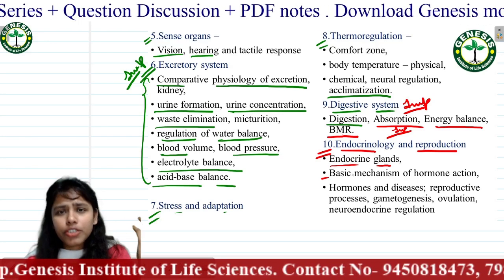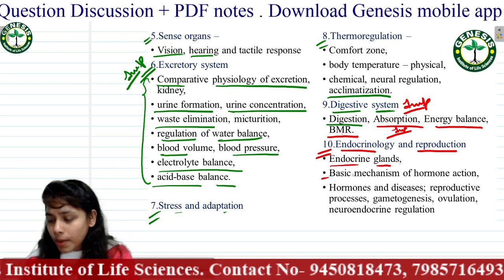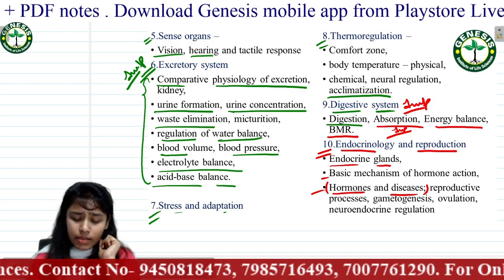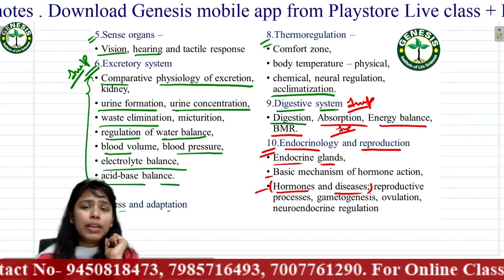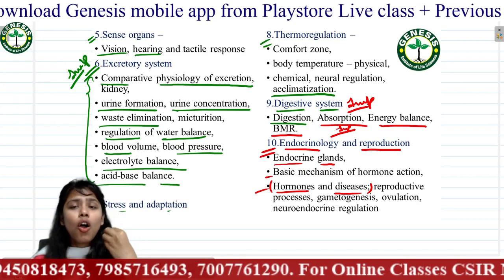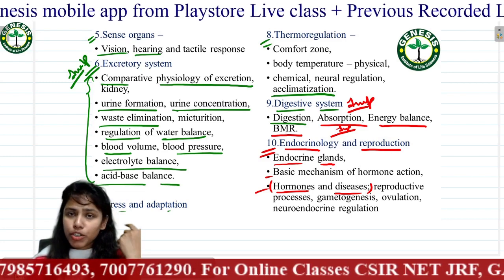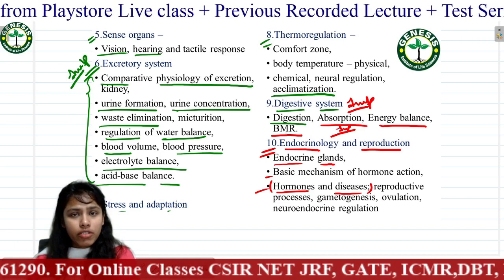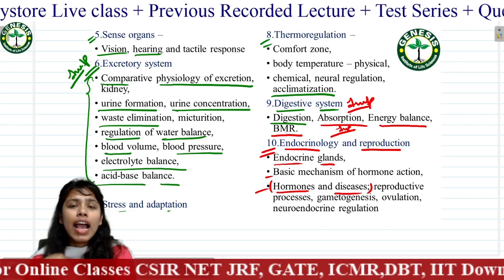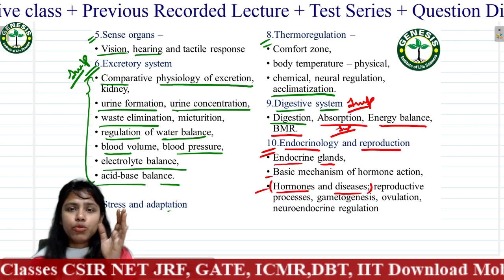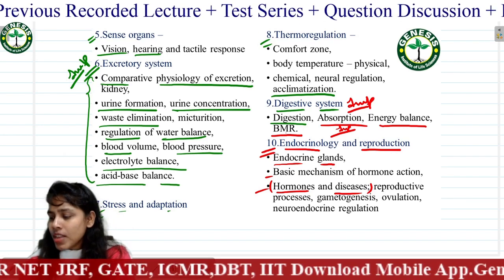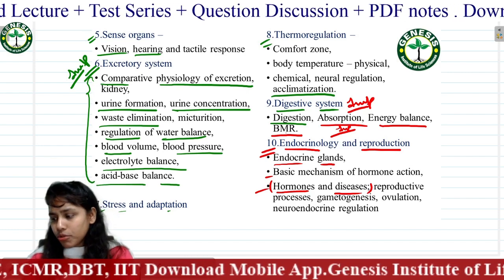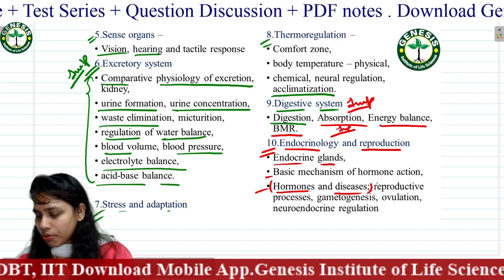You will also learn about hormones and their associated diseases — meaning hyper-expression and hypo-expression of any hormone, and which diseases result from each condition. Reproductive processes such as gametogenesis and ovulation are part of developmental biology, so they will be covered in that unit and not touched here.